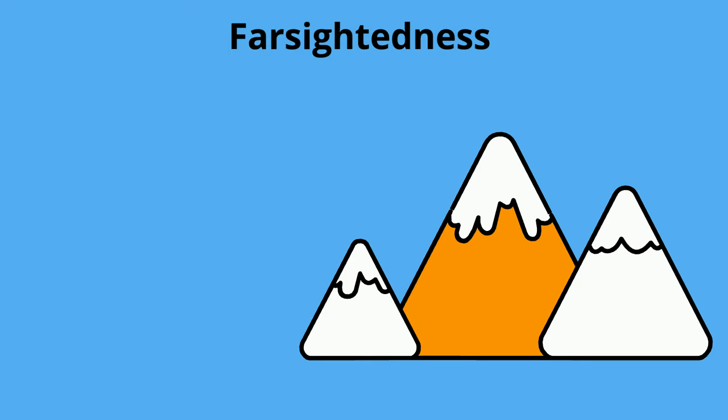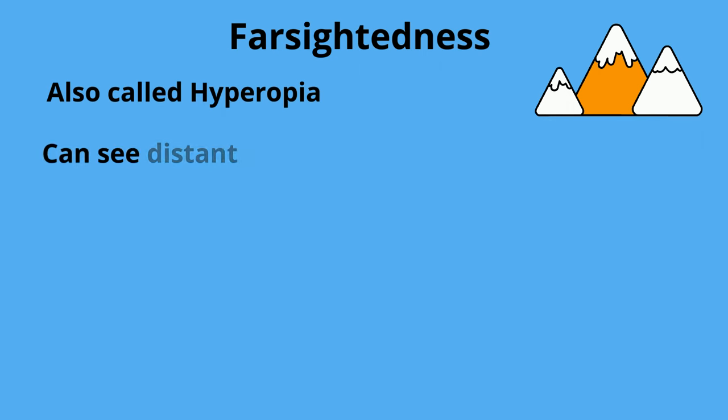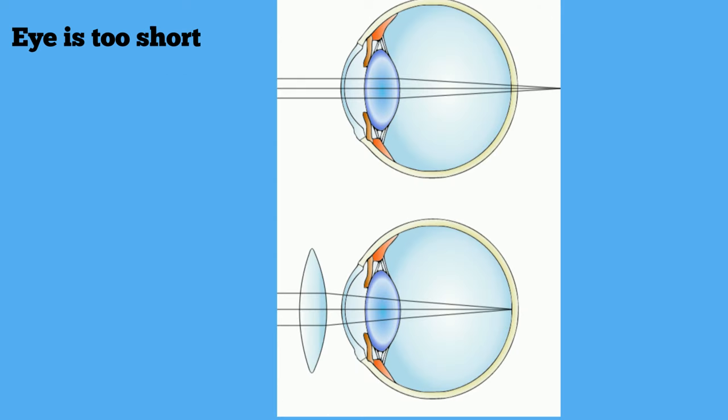Farsightedness, also called hyperopia, is when people can see distant objects clearly. However, objects up close are blurry. This may be caused by people with eyes that are too short or a flat cornea.